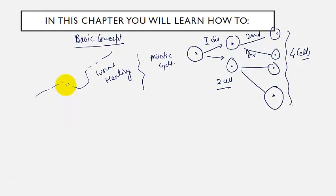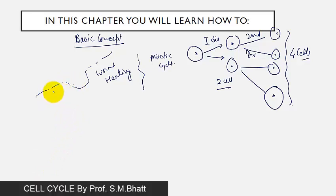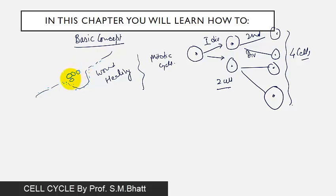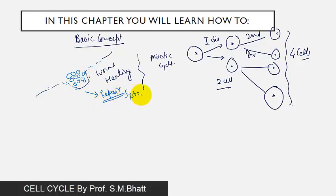When a wound occurs due to any cut, new cells form at the site. This process is called the repair system.